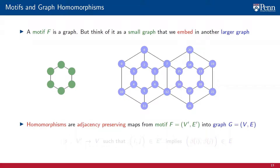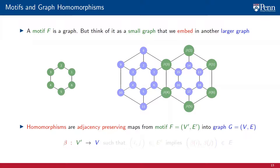Before we move onwards, we need to define homomorphisms formally. A homomorphism is an adjacency-preserving map from a motif F into a graph G. If the motif has vertices V' and edges E', while the graph has vertices V and edges E, a homomorphism is a map beta from the nodes of motif F into the nodes of graph G, such that if ij is an edge in the motif F — an element of E' — then the map images beta of i and beta of j are an edge of the graph G, an element of edge set E. It is easy to verify that this is true of the homomorphisms we have illustrated.